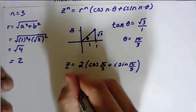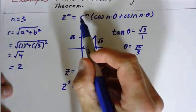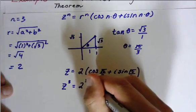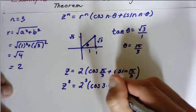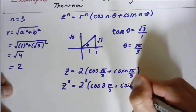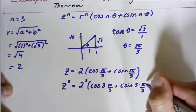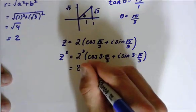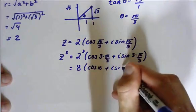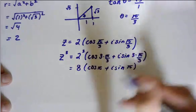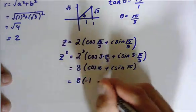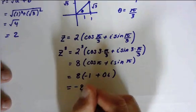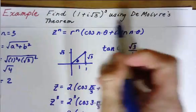Now we can write z equals r, which is 2, times the quantity cosine(π/3) plus i·sine(π/3). We want to cube that out. So now, finally, z cubed equals, using r to the n, we plug in n: 2³ times cosine(3 × π/3) plus i·sine(3 × π/3). This simplifies to π, so now we have 8 times cosine(π) plus i·sine(π). Cosine of π is −1, and sine of π is 0, so our answer is −8. We have now found this value using De Moivre's Theorem.